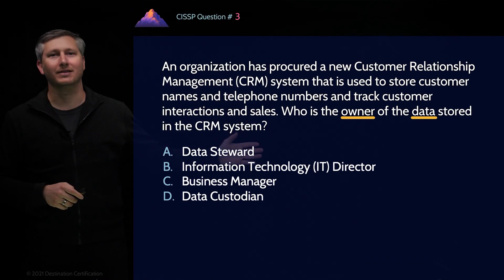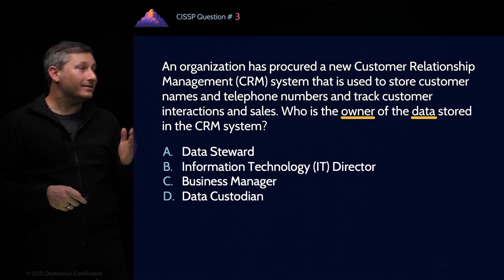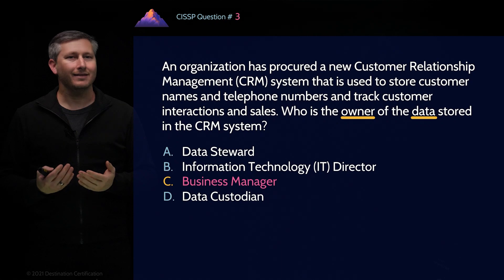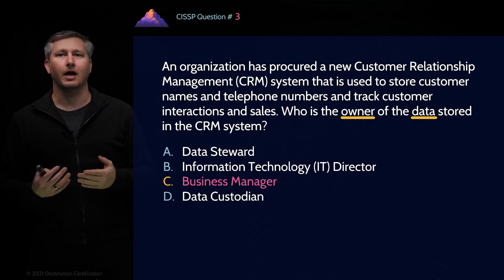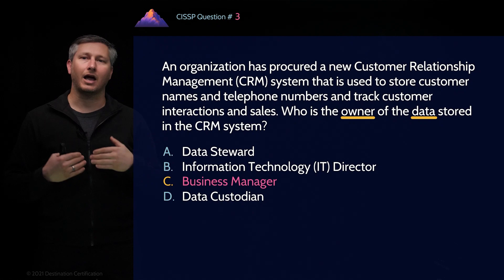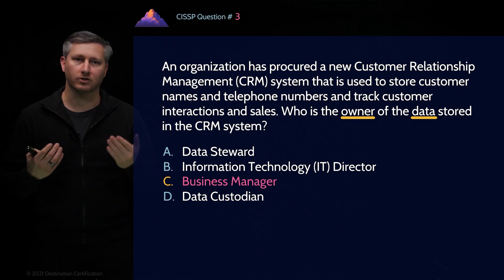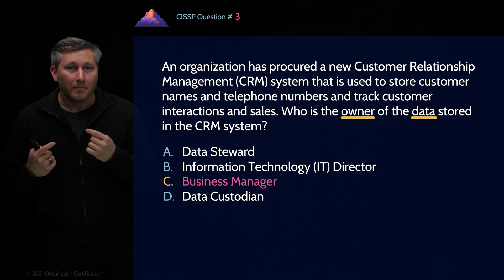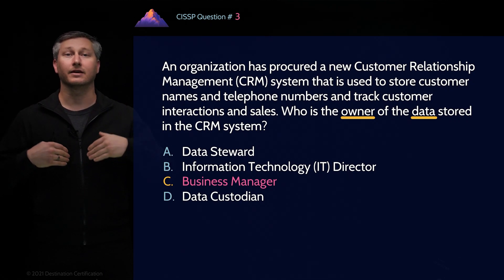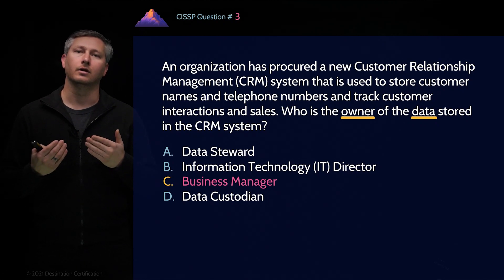So by process of elimination, the best answer for the data owner is answer C: the business manager. And this makes sense. Out of these four answers, the business manager best understands how the system is used by the organization and what data is stored in the system. The business manager understands the business value of the data in the system and is therefore the best answer as to who is the data owner.